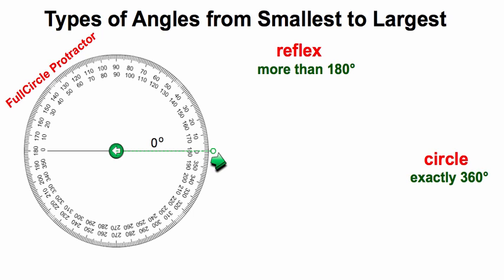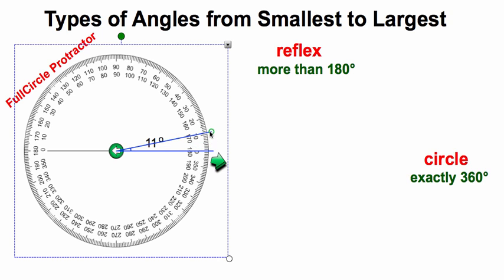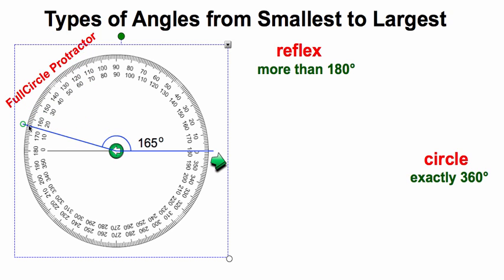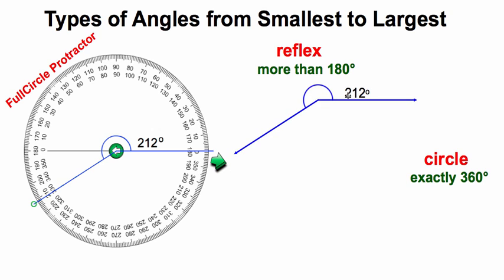Our next type of angle is a reflex angle. This type of angle requires a full circle protractor to make, and it's going to be an angle more than 180. As I'm bringing my side of this angle all the way around, we pass through acute, then right at 90 we're at right, then through obtuse, and when we get to 180 we're at a straight line. So now anything more than 180 is going to be a reflex angle. If I come here and spit that angle out, this is a reflex angle.